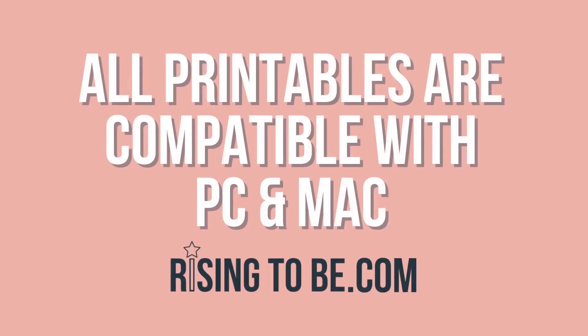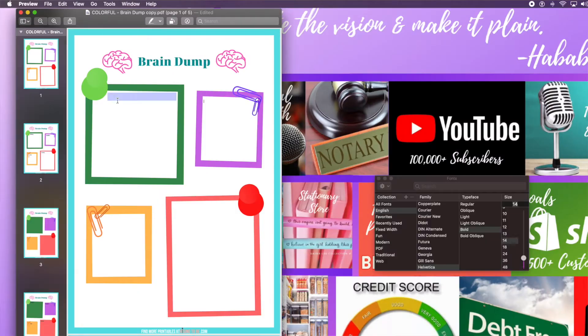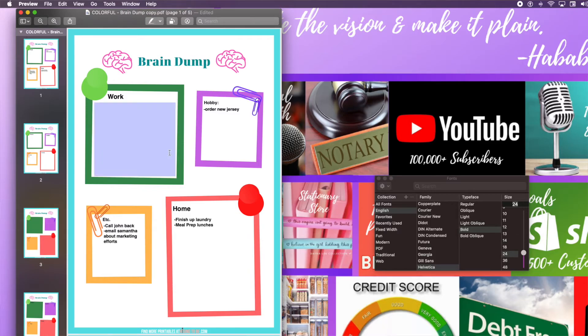By simply clicking on the printable after downloading, you can easily type directly on the printable and print out your newly edited printable. All of our printables here at Rise and Be are compatible with PC and Mac devices and can even be edited right from your web browser. On our brain dump printables, you can easily edit them by adding your own labels and titles and of course adding notes to it throughout your day.